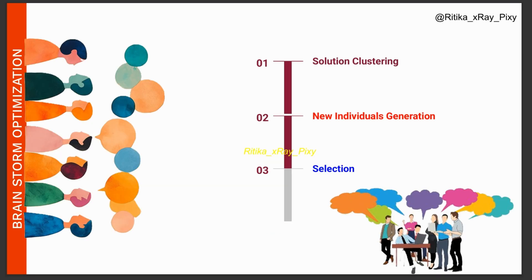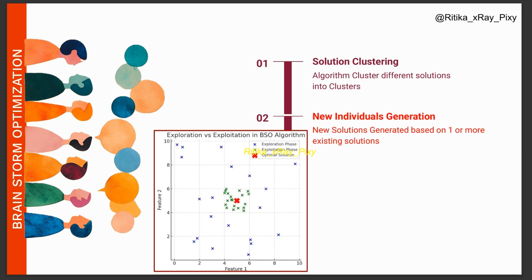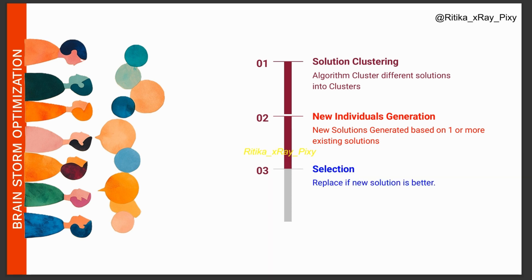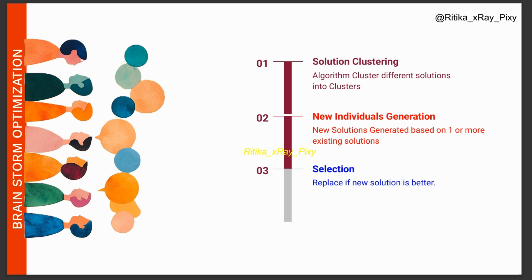This algorithm is simple and easy to use. There are three key steps: solution clustering, new individual generation, and selection. In solution clustering, the algorithm groups similar solutions into different clusters — like sorting ideas into categories. In new individual generation, new solutions are created based on one or more existing solutions from the clusters. If the new solution is close to the best one found so far, the algorithm focuses on refining good ideas — that is exploitation. If the new solution is created randomly or by combining ideas from different clusters, it helps explore different possibilities — that is exploration. In selection, if a new solution is better it replaces the old one, otherwise we keep the existing best solution.